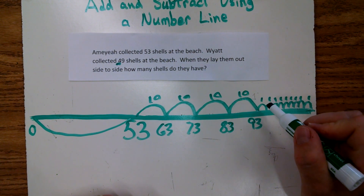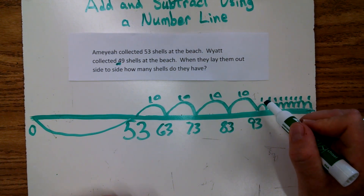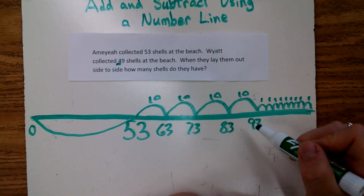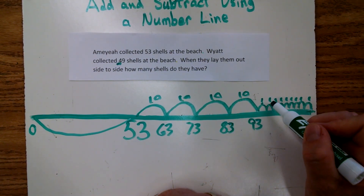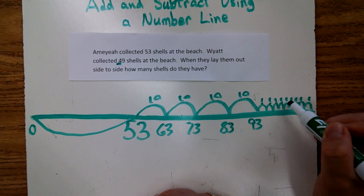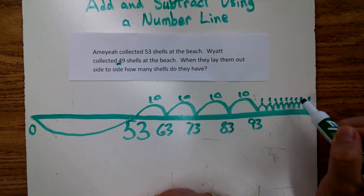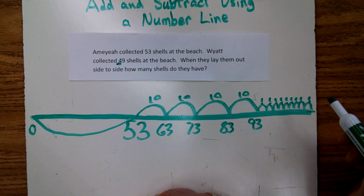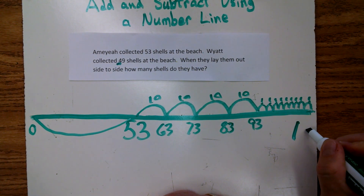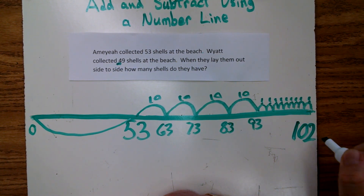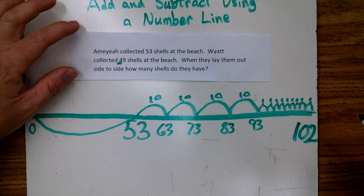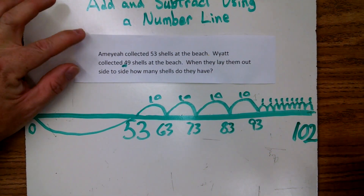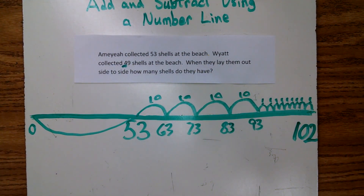Now it's time to count on ones. We'll just count on without writing it: 93, 94, 95, 96, 97, 98, 99, 100, 101, 102. So we went above 100 on this math problem, but that's okay. 102 is our answer. When we put their shells side by side, we end up with 102 shells.